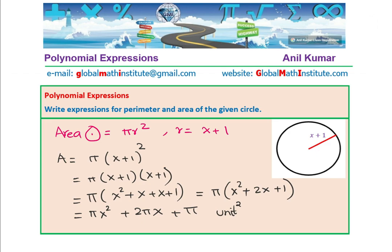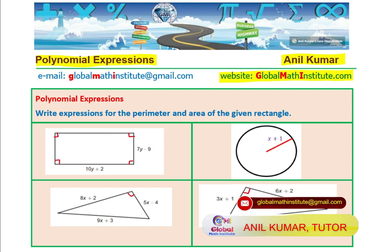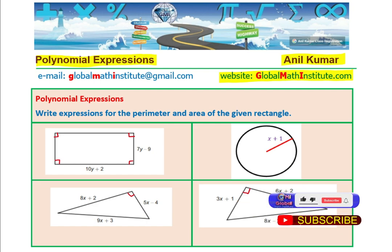So, with that, we come to an end of this particular video. And I hope you understand how do we find a polynomial expression for area and perimeter of these shapes. Feel free to write a comment, share your views. If you like and subscribe to my videos, that'd be great. In case you want to learn from me, you can always send an email on the address given. Thanks for your time and all the best.